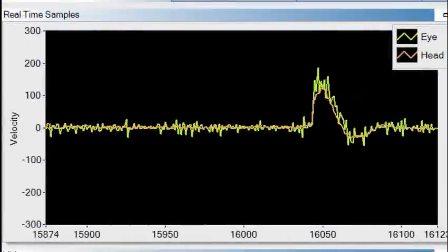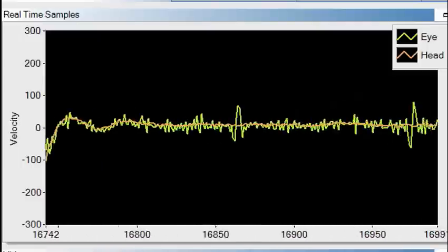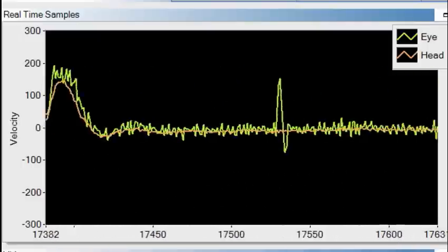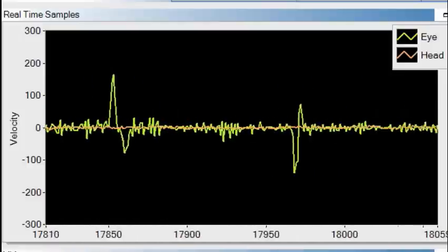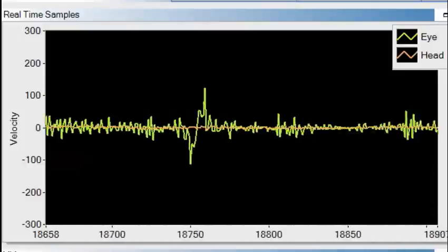The real time trace window allows you to monitor both head displayed in red and eye movement displayed in green while performing one head impulse test. By monitoring the real time trace, you can make sure the patient is cooperating and staring at the fixation dot.